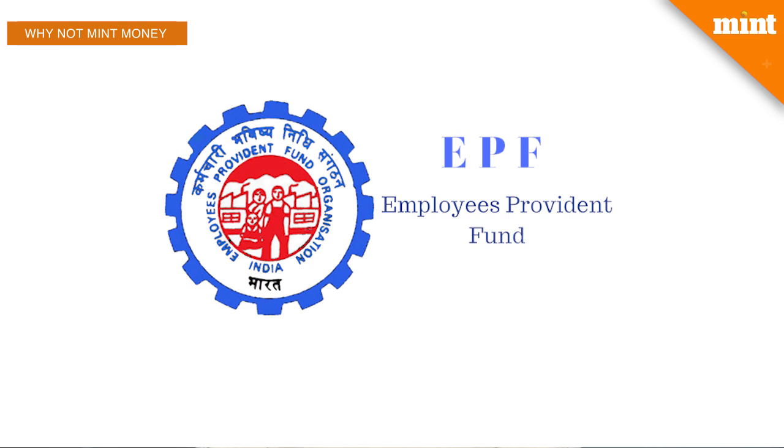For instance, the public provident fund is currently giving a rate of 7.9%. It is therefore wise to keep track of your EPF money, and one of the mistakes that many people make is that they get lazy when it comes to transferring their EPF money as they change jobs.